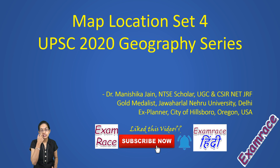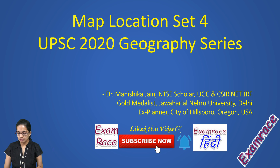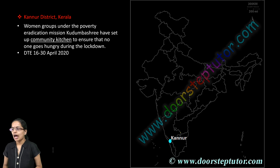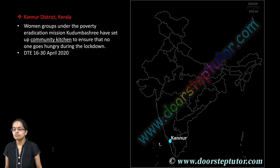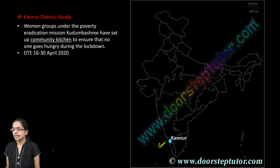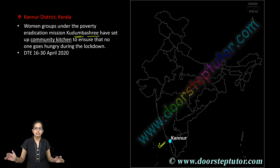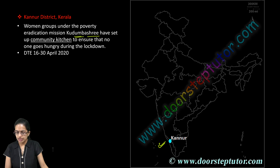Let's talk about some of the major map locations important for your UPSC mains. The first location is Kanoor district in Kerala, where a mass kitchen was started for eradicating poverty under the name Kudumbashree. This is a community kitchen initiative that was started during the lockdown period, covered under Down to Earth.